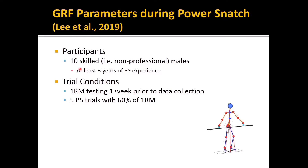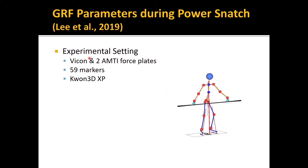Participants: 10 skilled males volunteered to participate in this study, and they had at least a few years of power snatch experience. For trial conditions, one repetition maximum testing was performed one week prior to data collection. One week later, they returned for actual data collection and performed five power snatch trials at 60% of one RM.